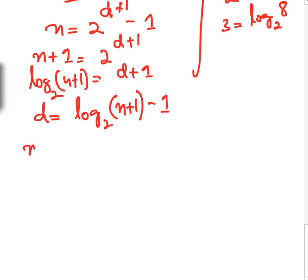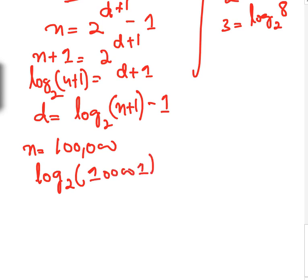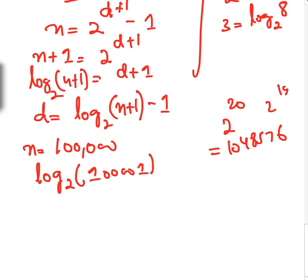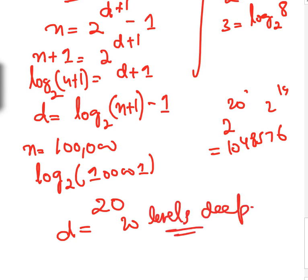For example, if n = 100,000 nodes: d = log₂(100001) − 1. Since 2^20 ≈ 1,048,576, which is greater than 100,000, and 2^17 is less than 100,000, the depth is approximately 17 to 20 levels. So even for 100,000 nodes, the tree is only about 20 levels deep — which is very efficient.